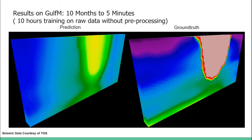Now we introduce the experiment results on our dataset of Gulf of Mexico. We demonstrate the prediction on the left and the ground truth on the right. The ground truth is generated from 10 months of geophysics effort. We successfully reduce the duration to five minutes of model inference with 10 hours of model training.